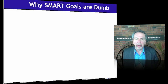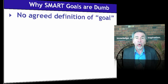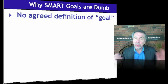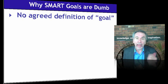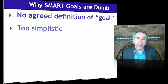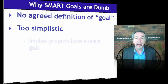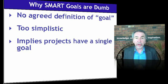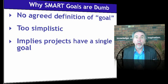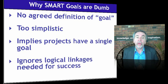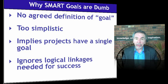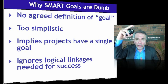Here's why they're dumb. First, there's no agreed definition of what a goal means — ask your colleagues to define and write it down, and I bet you will not have consensus. Second, it's way too simplistic; strategies and projects are more complex and require greater precision. Third, it implies projects have a single goal, whereas they really have multiple objectives. Fourth, it ignores the logical, critical linkages needed for success — the linkages between the actions you can take and the ultimate result.